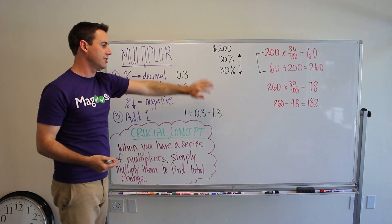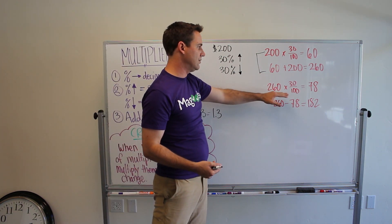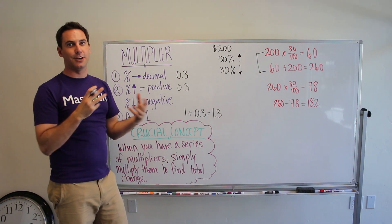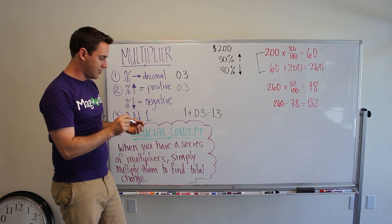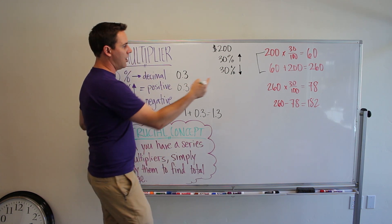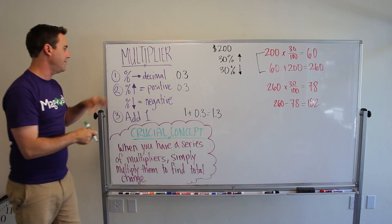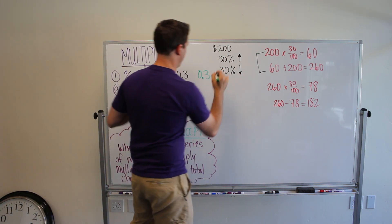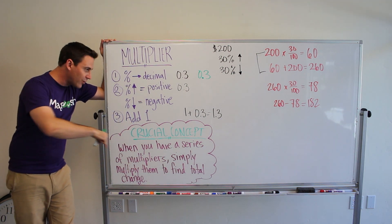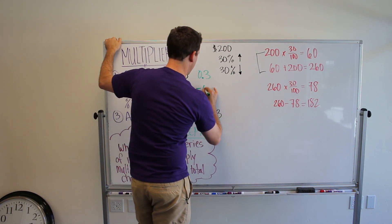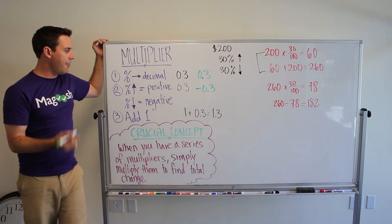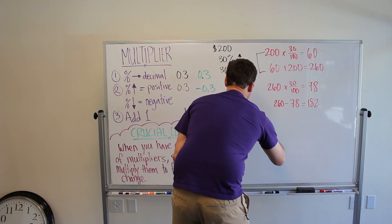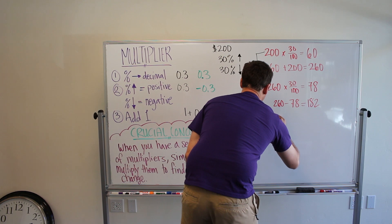Right now I could use the multiplier 1.3, then take 260 times the next multiplier to get 182 — but I can do it a lot faster by using combined multipliers. For the second change, we have a 30% decrease. So: change 30% to a decimal — 0.3 — and since it's a decrease, make it negative: −0.3. Then add 1: 1 plus −0.3 gives us 0.7.